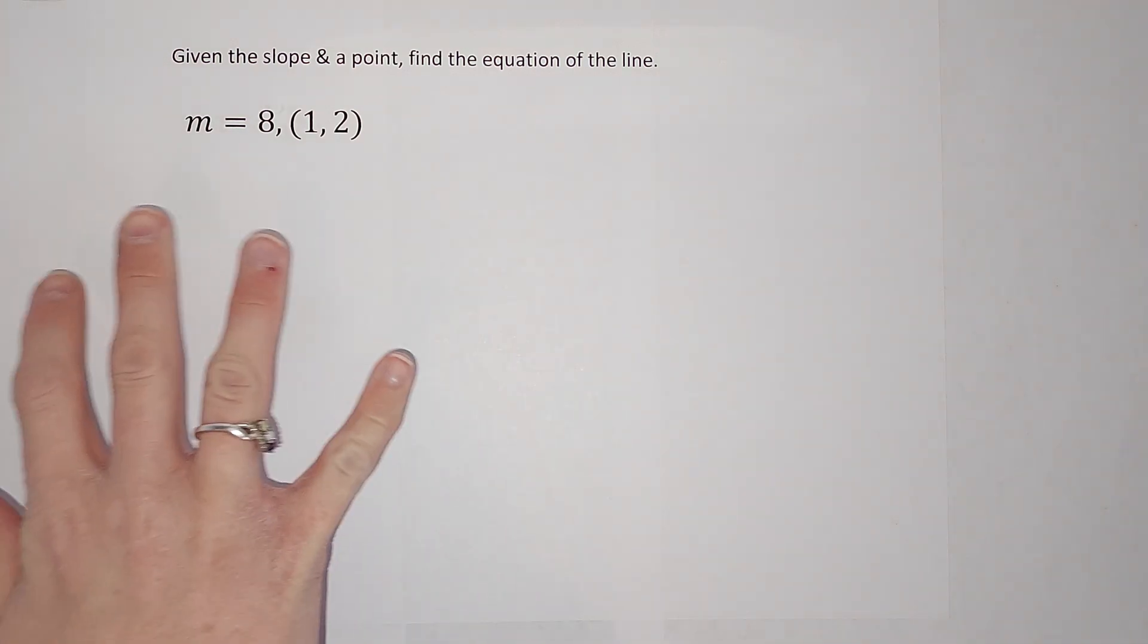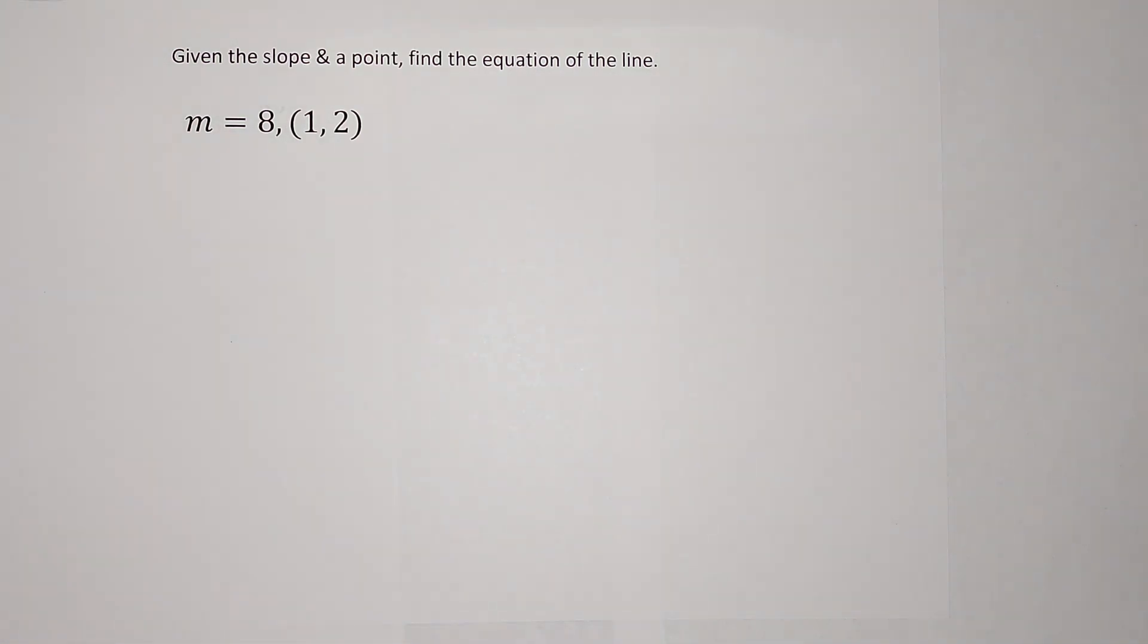Hey guys, we have been given a slope and a point and we want to figure out what the equation for this line is that has this slope and this point.